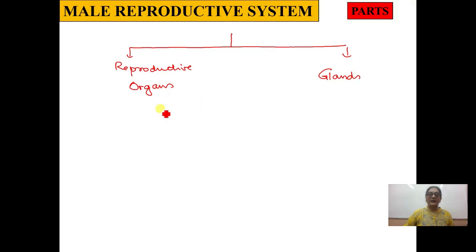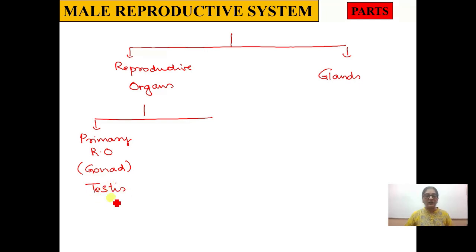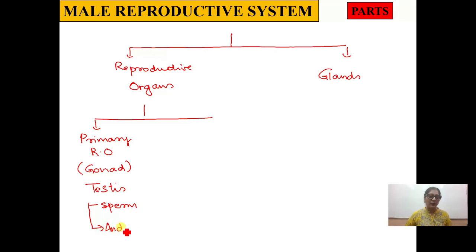The reproductive organs are of two types. One is called the primary reproductive organ, also called gonads. The male gonad is called the testis. The testis has two functions: first, formation of the male gamete — that is, sperm; and second, formation of the male hormone — called androgens, of which the most important is testosterone.